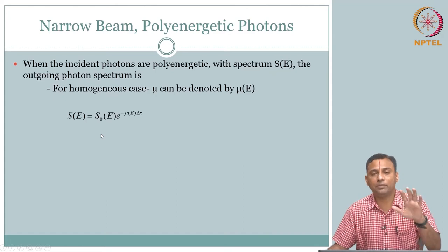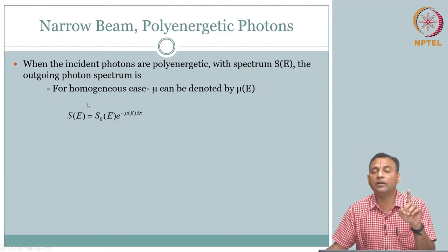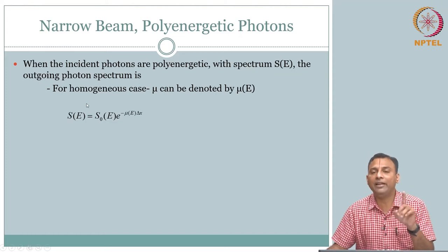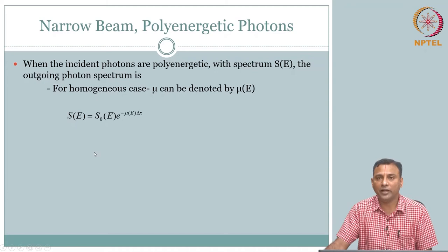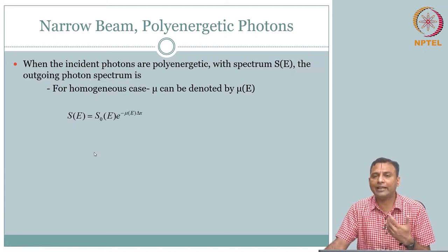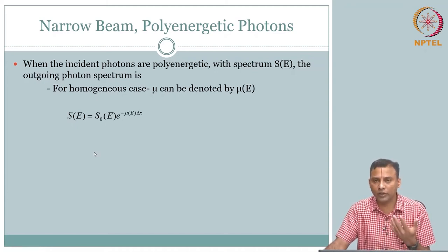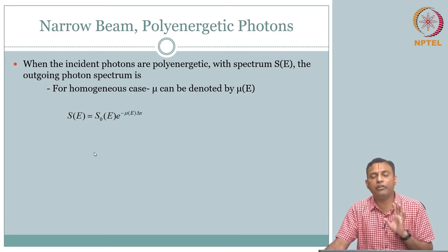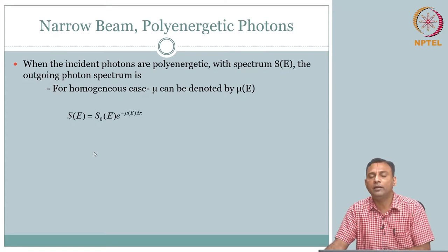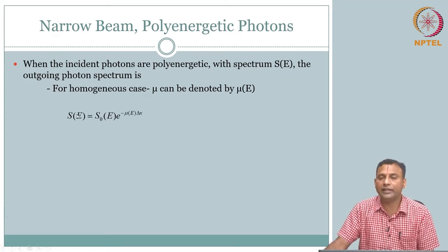When you send a spectrum, we pretend that each energy level behaves independently and the net sum is what you are getting. It is a direct extension of the mono-energetic case — the poly-energetic case is the same behavior for mono-energetic but with multiple energies denoted by S of E spectral lines.